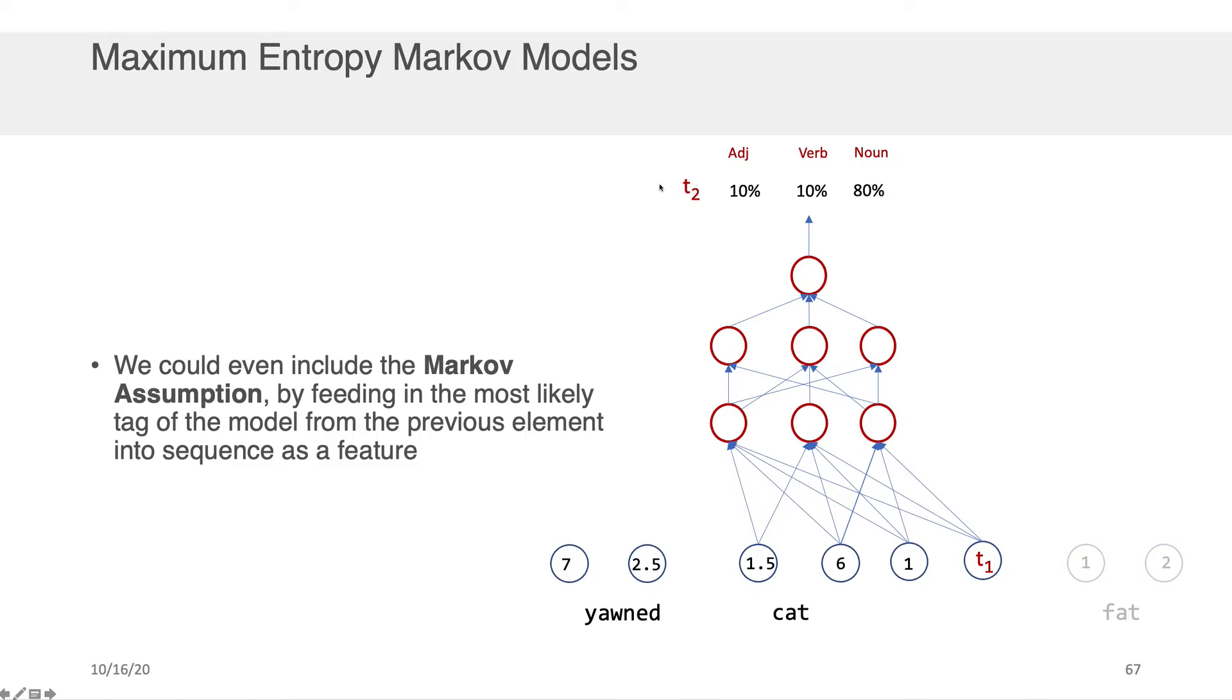So here you can see I had fat cat yawned and I had the vector representation. Well, let's assume I passed the word fat through and I got the tag that I wanted T1. Well, now I can just take that tag, put it down here, and put the most likely class and just attach it into the neural network and include it as a feature for the prediction at the next step.